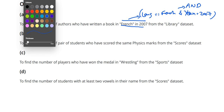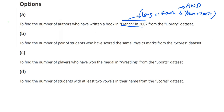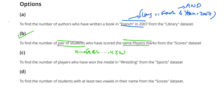Option B: to find the number of pairs of students who have scored the same physics marks from the scores dataset. Here we are asked about a pair of students — a set of two students — which requires comparing one student's physics marks with all the other remaining students' marks. If the picked-up card is X, it will be compared against all remaining cards A, B, C up to Y and Z. So a nested loop is necessary, and B is one of the right answers.